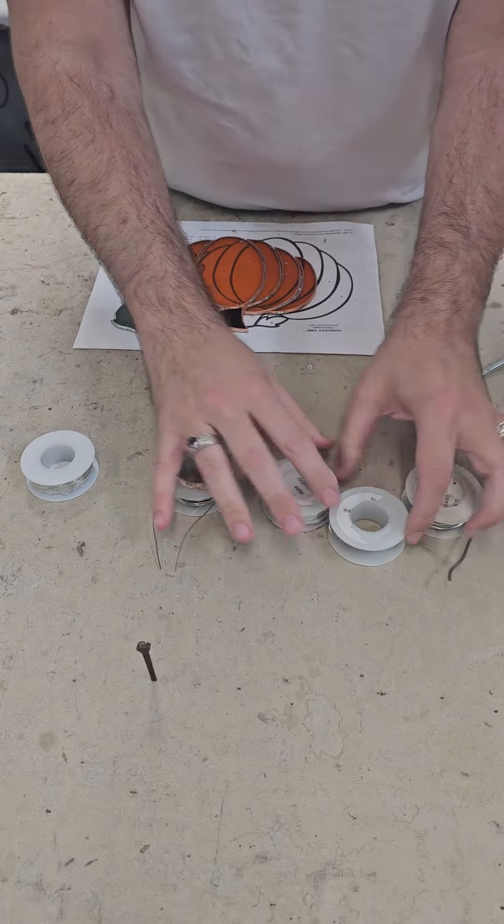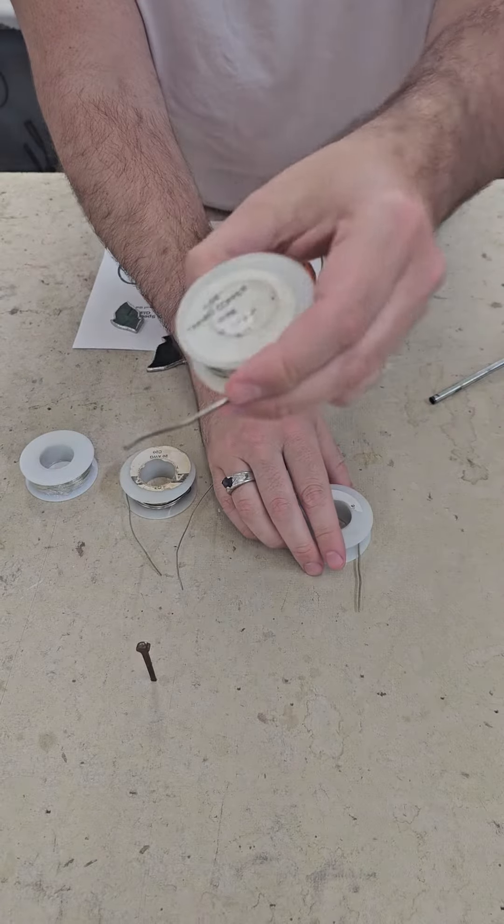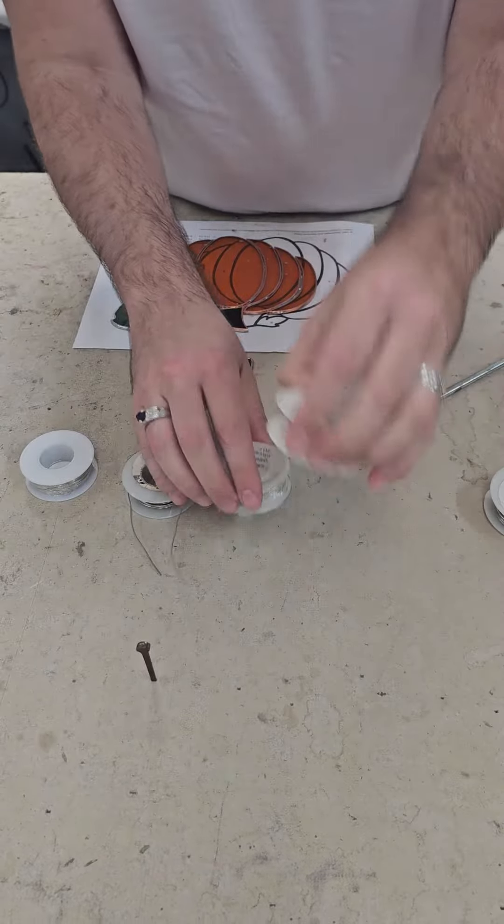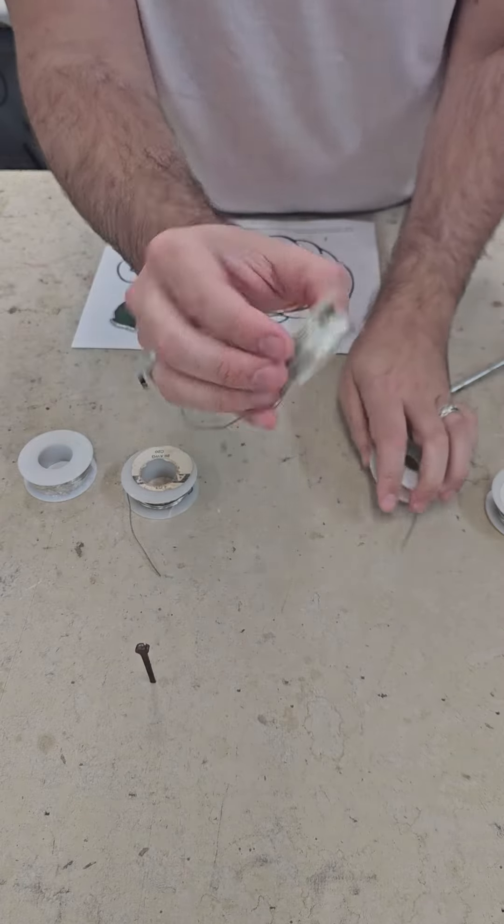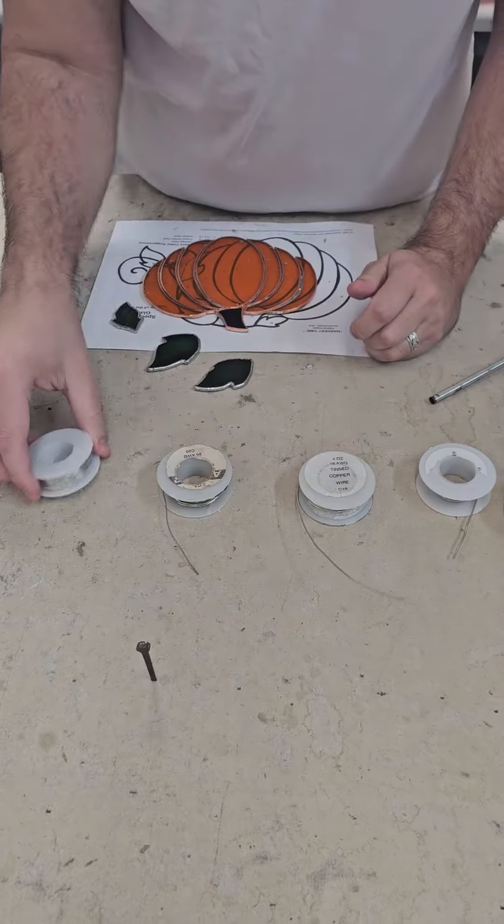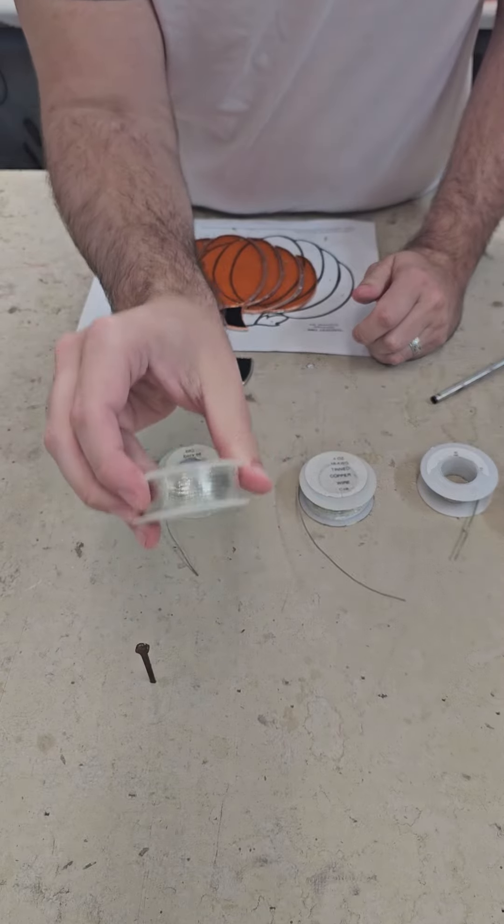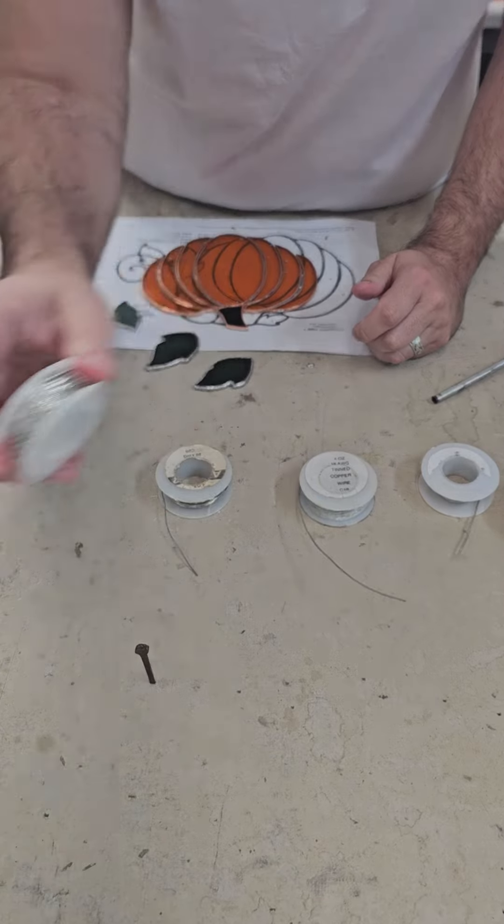Tinned wire is available in a bunch of different gauges. You have everything from 12, which is really, really thick, 16, 18, 20, all the way down to 24. This one's not open, but it's really hair thin. I'm not sure if you can see.